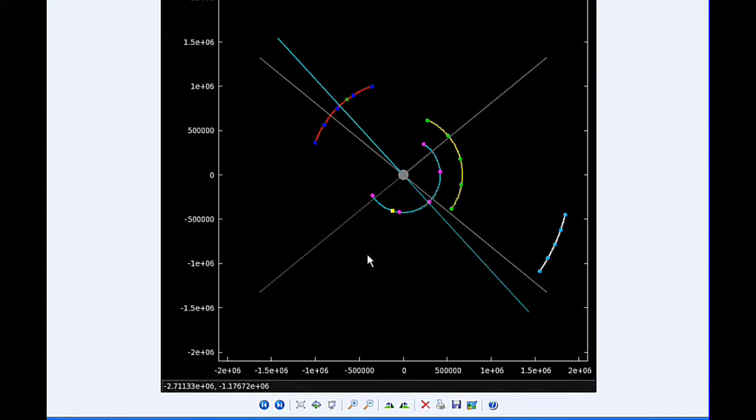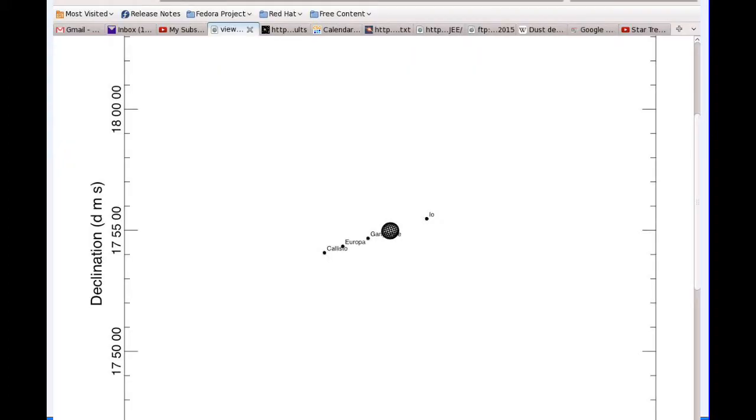At 4:57 UTC, Io goes through an apojove, the furthest it's going to be from Jupiter in this orbit at 423,545.7 kilometers. At six hours UTC, Io is firmly in Quadrant 4 heading east.